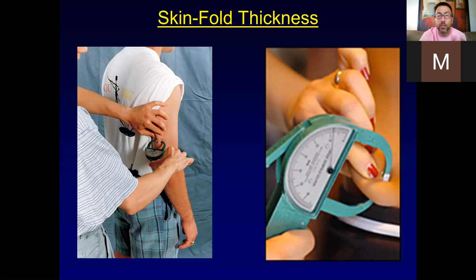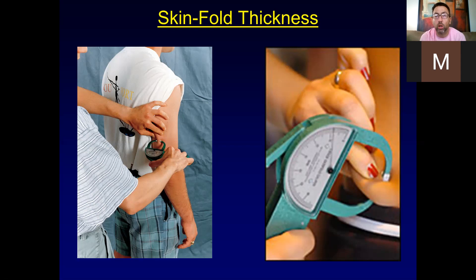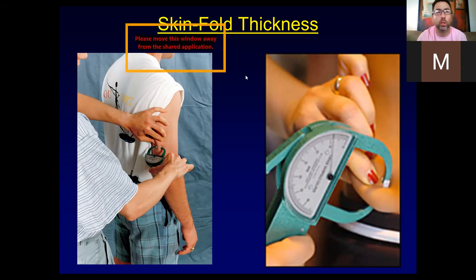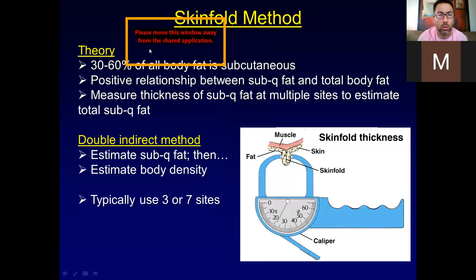Skin folds were considered the second-best method back in the 60s, 70s, and 80s. If you're well trained at taking skin folds, you can get estimates of body composition and percent fat and lean tissue that are not too far off from underwater weighing, though not quite as accurate.